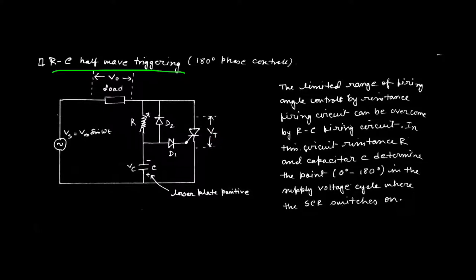The terminal voltage across the load is suppose V0 and the voltage across the switch is defined by Vt. Diode D1 is used to protect against reverse biasing current flowing from anode to gate during reverse biasing condition, and D1 also protects when the capacitor starts discharging and the capacitor current tries to flow in the opposite direction. The variable resistance R is used to give the proper shape of the output voltage and can be varied to control firing angle anywhere between 0 to 180 degrees.